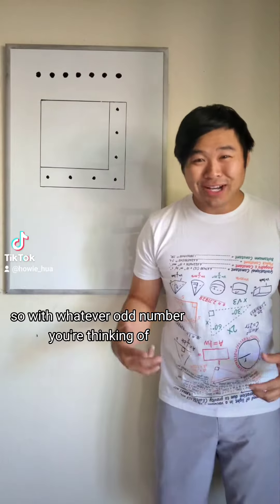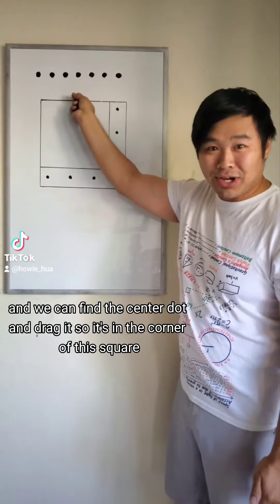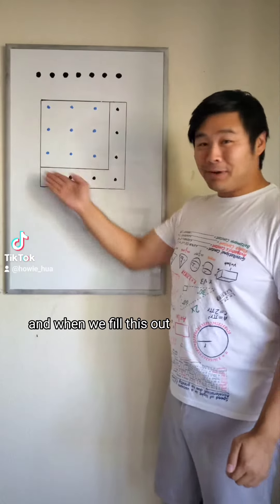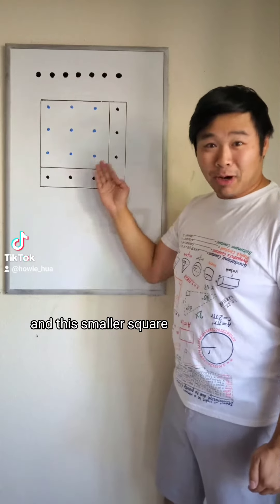So with whatever odd number you're thinking of, we can imagine that many dots in a line. And we can find the center dot and drag it so it's in the corner of this square. And when we fill this out, we can see that this L shape is the difference between this larger square and this smaller square.